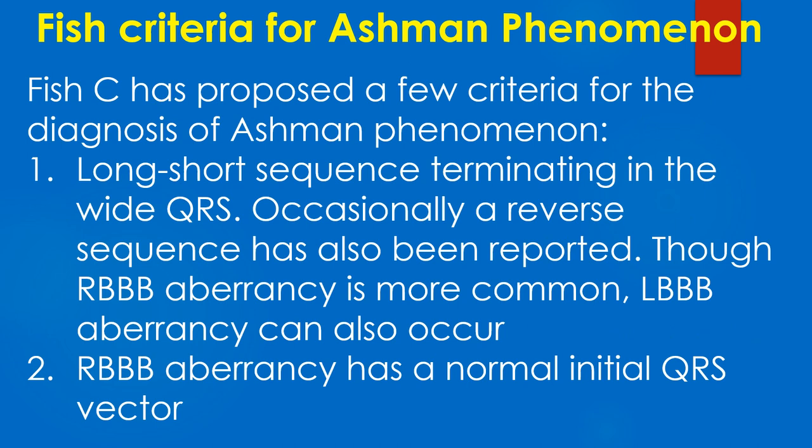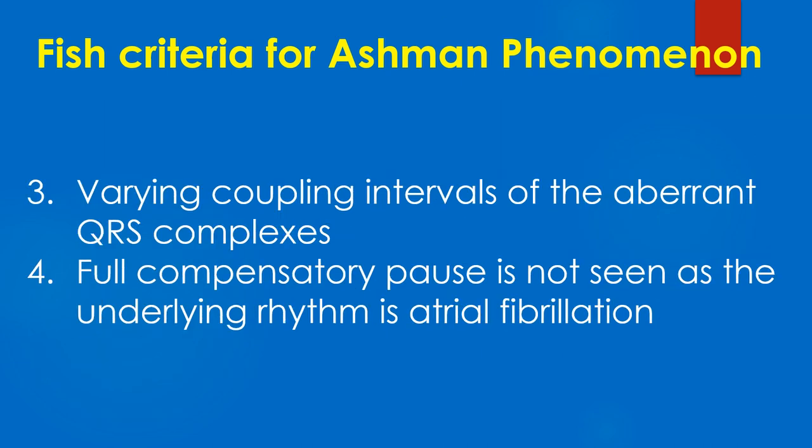Fish has proposed a few criteria for the diagnosis of Ashman phenomenon: 1) Long-short sequence terminating in the wide QRS — occasionally a reverse sequence has also been reported. Though RBBB aberrancy is more common, LBBB aberrancy can also occur. 2) RBBB aberrancy with a normal initial QRS vector. 3) Varying coupling intervals of the aberrant QRS complexes. 4) Full compensatory pause is not seen, as the underlying rhythm is atrial fibrillation.